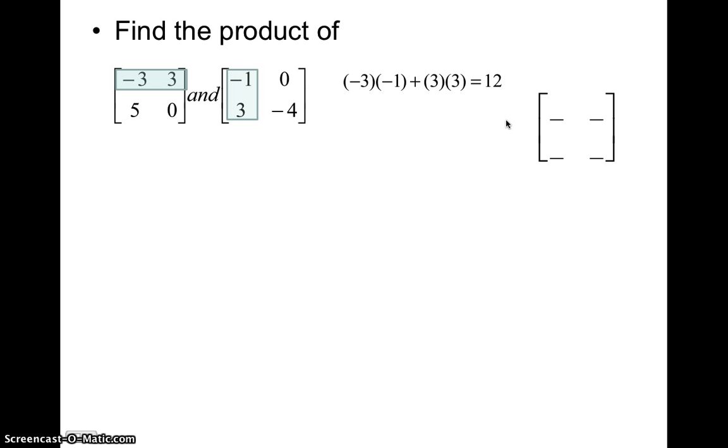We multiply negative three times negative one, the first elements of each, and then three times three, the second elements of each. And we add three plus nine is 12. And we stick that right in the first column, first row of the product.